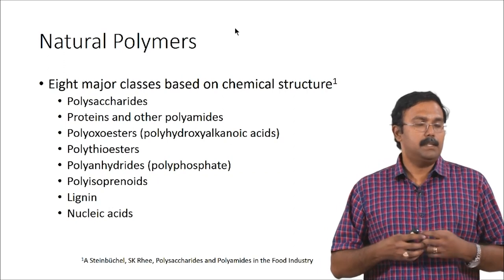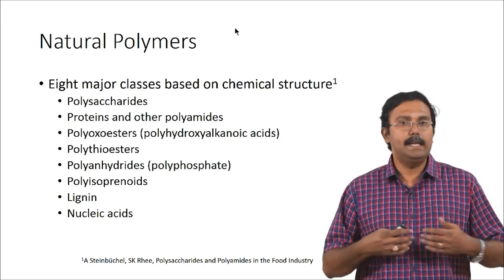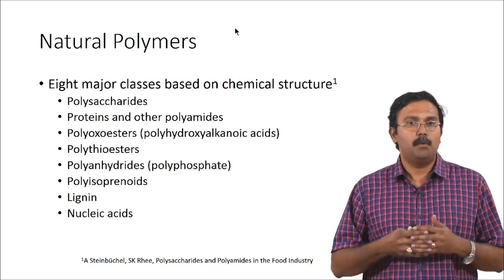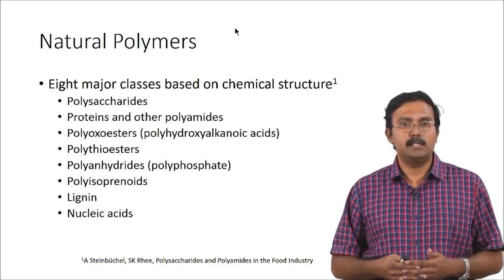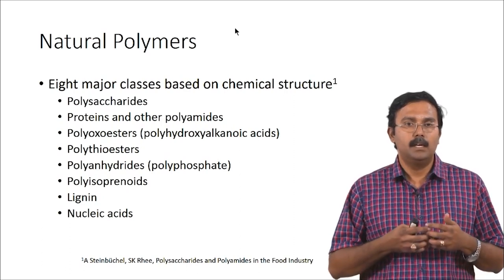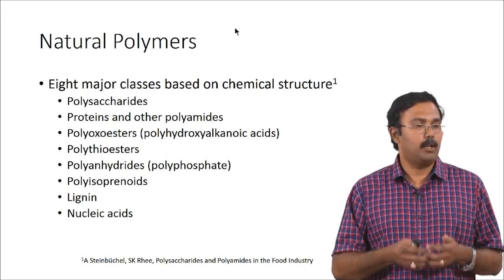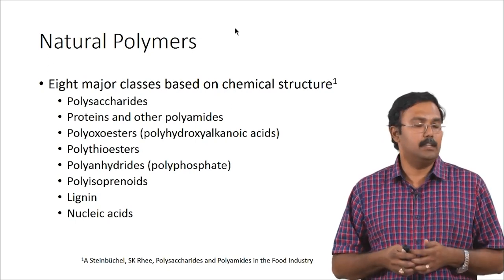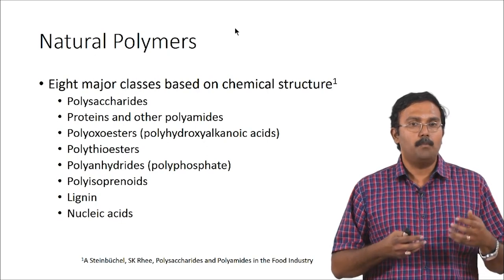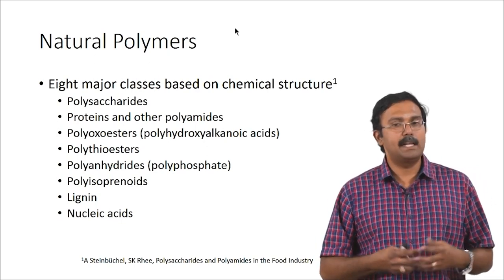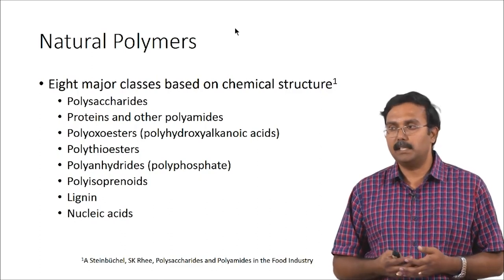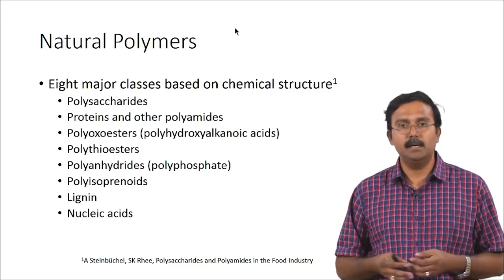Natural polymers are actually classified into 8 major classes based on chemical structures: polysaccharides, proteins, polyoxo esters, polythio esters, polyanhydrides, polyisoprenoids, lignin, and nucleic acids. Out of these, polysaccharides and proteins have actually been extensively studied because those are the components which are present in your ECM. They have actually been explored in depth. The polyoxo esters, which would be the polyhydroxyalkanoic acids, have also been studied to a reasonable level.